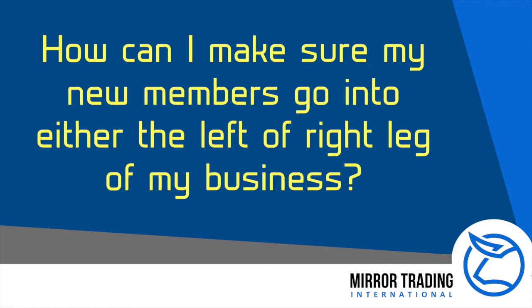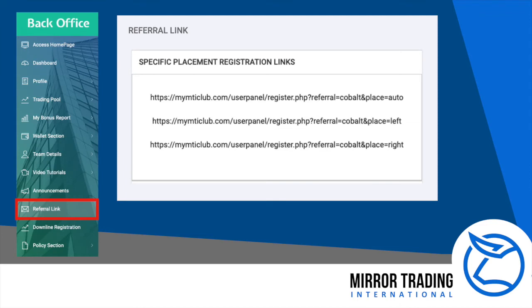How can I make sure my new members go into either the left or right leg of my business? In the menu on the left, when you click on referral link, amongst the options, you will see specific placement registration links. Look at these links a bit closer, and you will discover three different options — auto, left, or right.